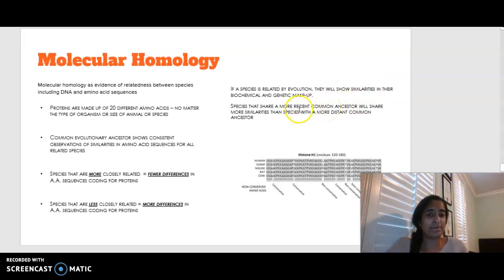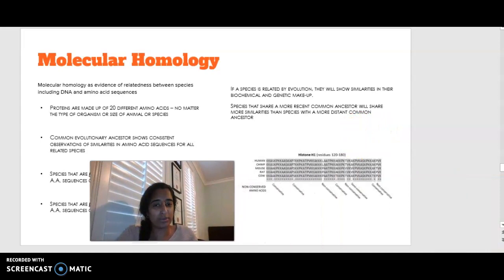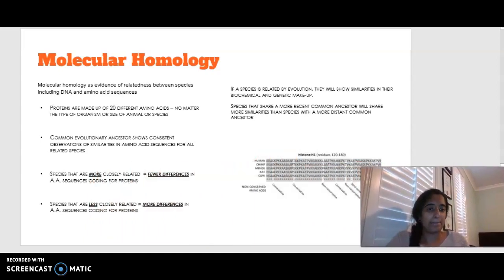And species that share a more recent common ancestor are going to share more similarities than species that are a distant common ancestor. So what we are looking at is we are comparing the DNA sequence or the amino acid sequences for different animals and looking at the similarities and differences that they may have to identify whether or not they are related.